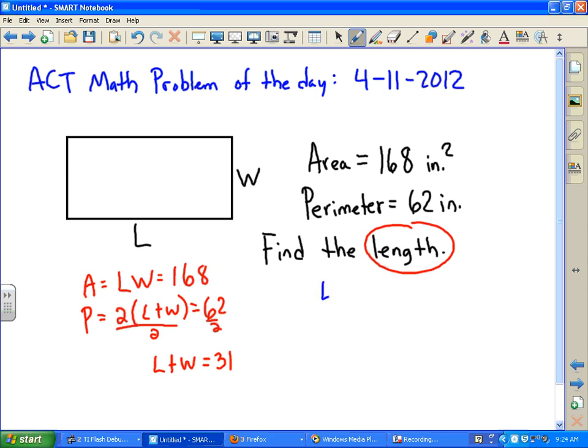So we have the product of two numbers is 168, and the sum of the two numbers has to be 31. So what we need to do is get factors of 168 that add up to 31.